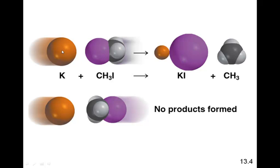The particles have to be in the right orientation when they collide for the reaction to occur. In the incorrect collision shown, the K collides with the CH3 instead of the I — so if they're not oriented properly, the reaction will not occur. In addition to the frequency of the collision and having sufficient energy for the old bonds to begin to break, the molecules must be oriented in the correct direction so that the species which are going to combine to form a product must collide with each other.